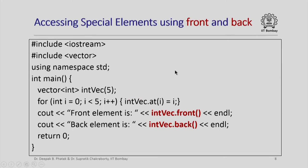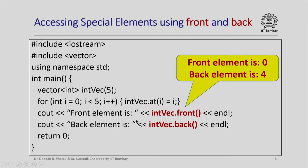I can also access special elements of a vector using the 'front()' and 'back()' member functions. Using the same integer vector of size 5 initialized to 0, 1, 2, 3, 4, 'int_vec.front()' accesses the first element and 'int_vec.back()' accesses the last element. Executing this program shows that the front element is 0 and the back element is 4.